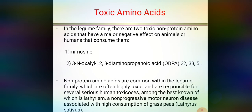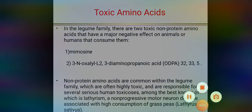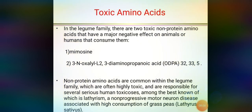The second toxic amino acid is ODPA. Non-protein amino acids, commonly found within the legume family, are often highly toxic and are responsible for several serious human toxicoses. Among the best known is lathyrism, which we covered in the second part. Lathyrism is a non-progressive motor nervous disease associated with high consumption of grass peas.